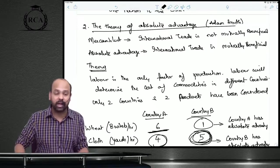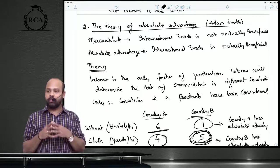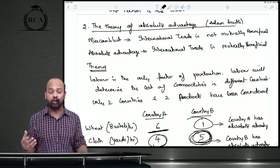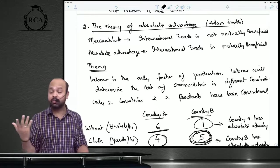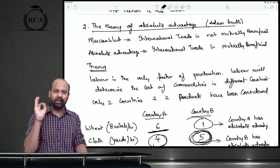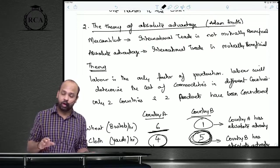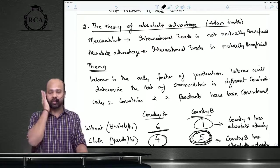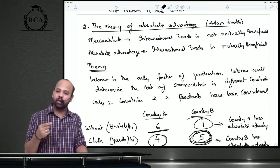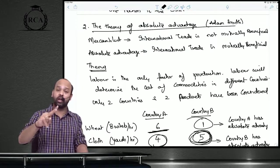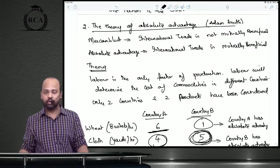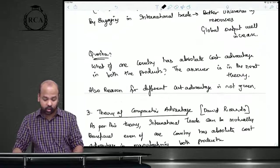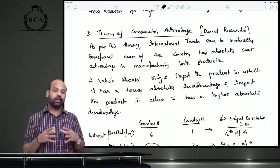We worked through an example involving wheat and cloth. However, this theory assumes labor is the only factor of production, and provides no explanation for why different countries have different absolute advantages in manufacturing different products. The summary: one country has absolute advantage in one product, another country in the other product — they engage in trade of these products. But this theory fails to answer: what if one country has absolute advantage in both products?